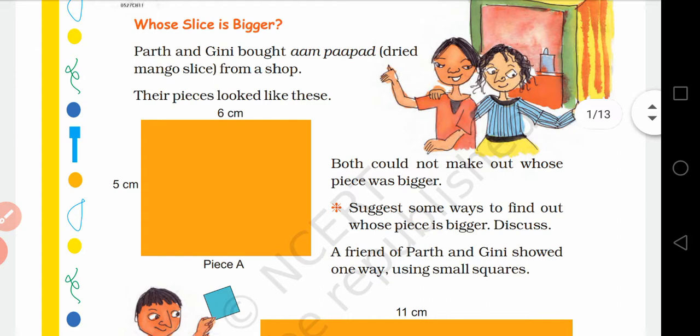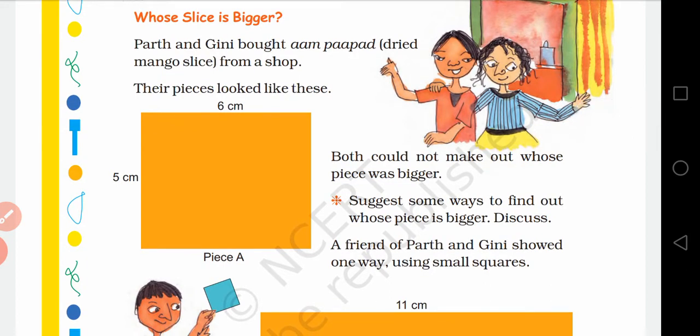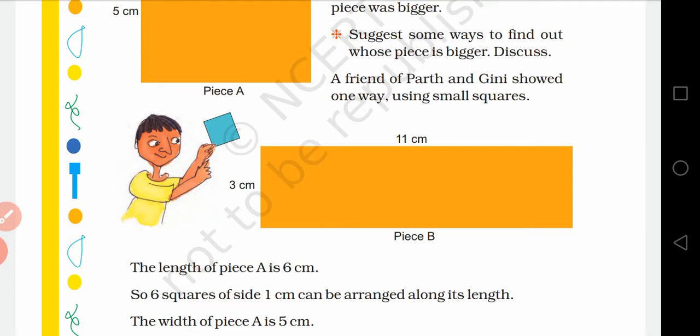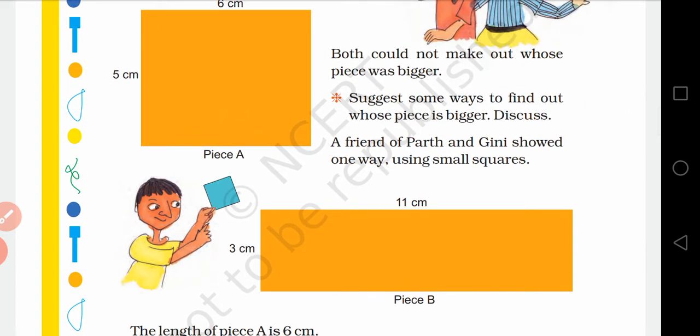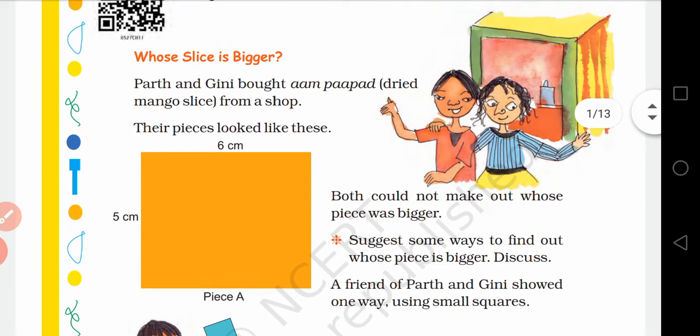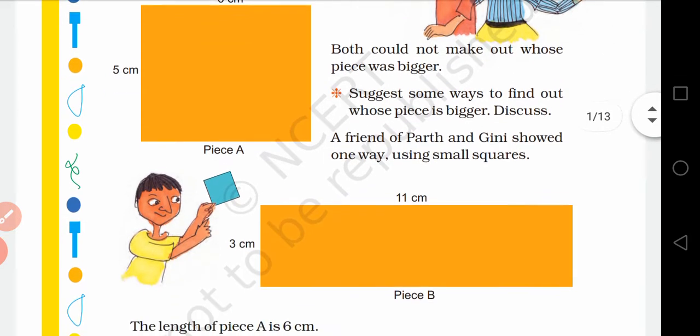So Perth ke paas jo bhi aam papad ka shape tha, it was length 6 cm and width 5 cm. Aur Ginni ke paas jo aam papad tha, it was length 11 cm and the breadth 3 cm. So we have already discussed how we can find out the perimeter of a given shape. We have 4 sides and we can add 4 sides to find out the perimeter. So their pieces look like these. Both could not make out whose piece was bigger.